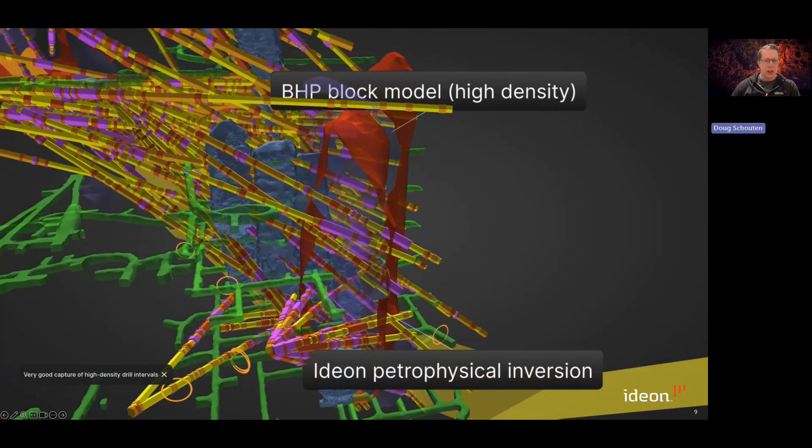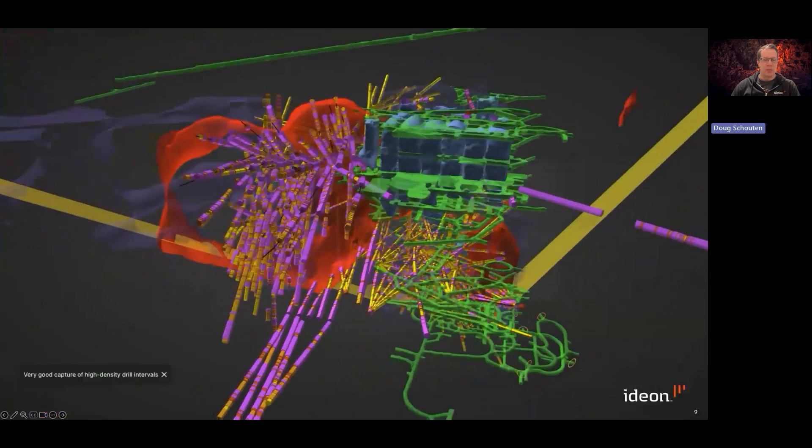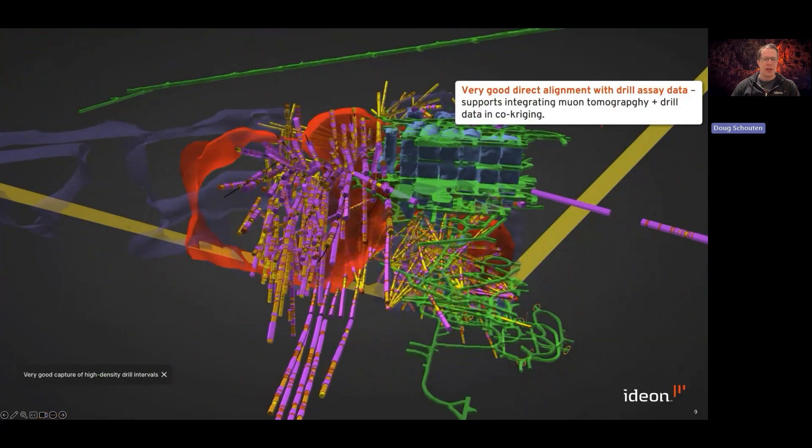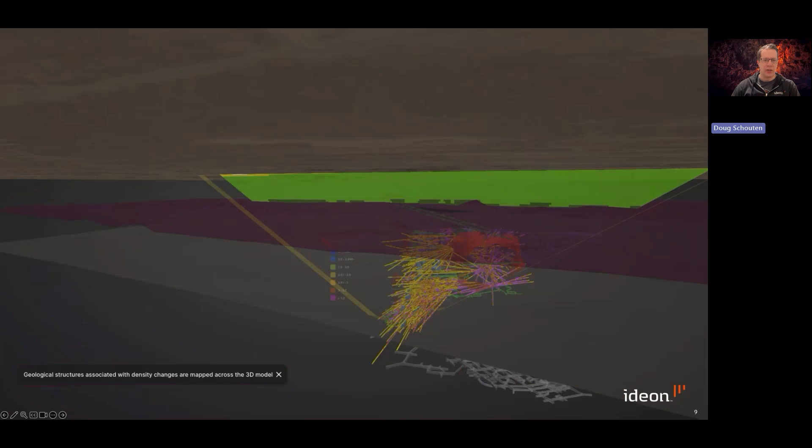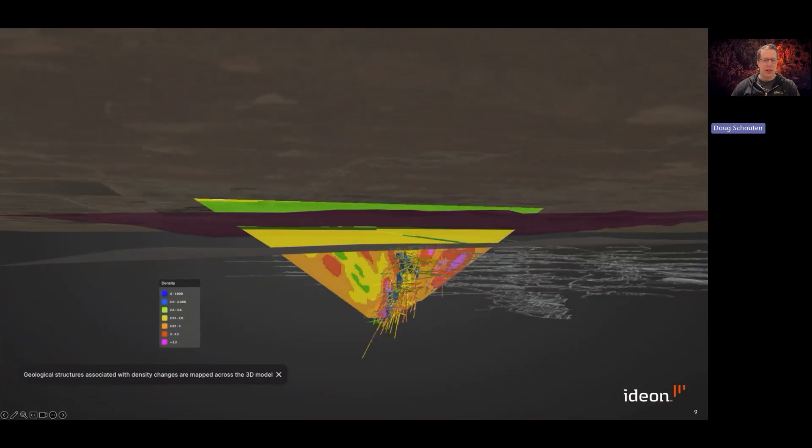If we zoom in on the deeper section, you can see how well that 3D surface conforms both to the BHP block model shown here as this translucent magenta, but also to the drill intercepts. Then zooming up to the flanks 500 to 600 meters away from the detectors, you can see how well again that red surface encompasses the high density drill intercepts, demonstrating very good resolution to resolve the mineralization.